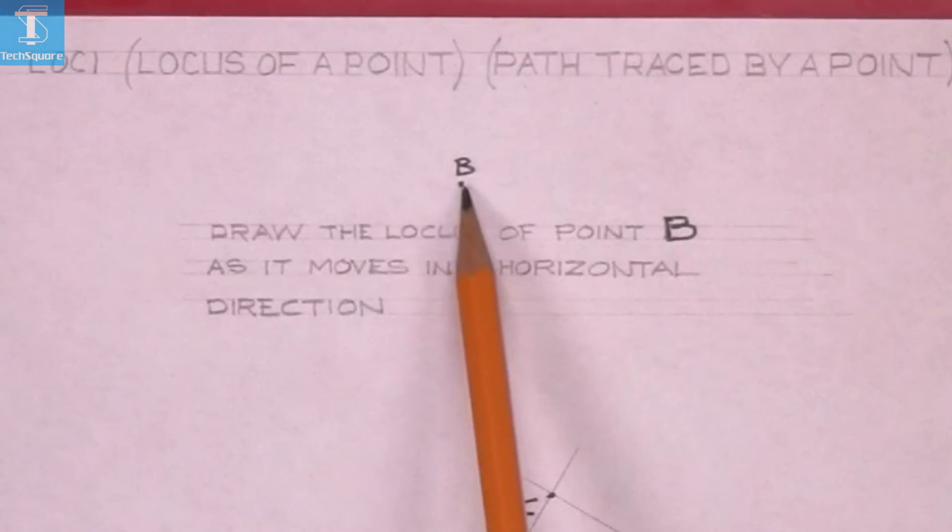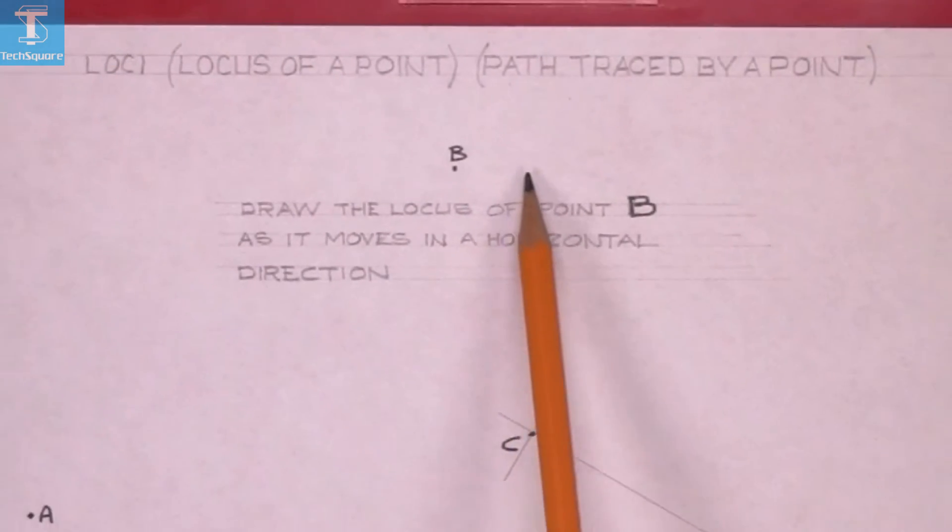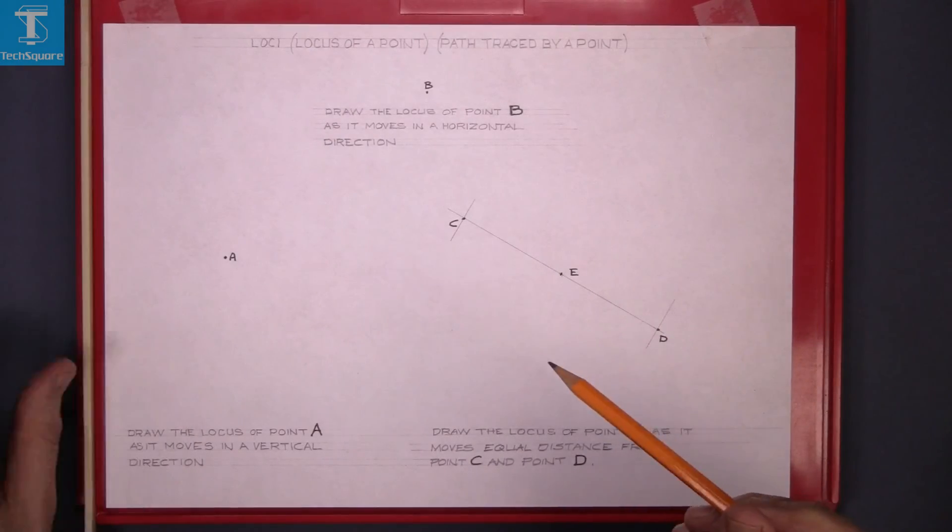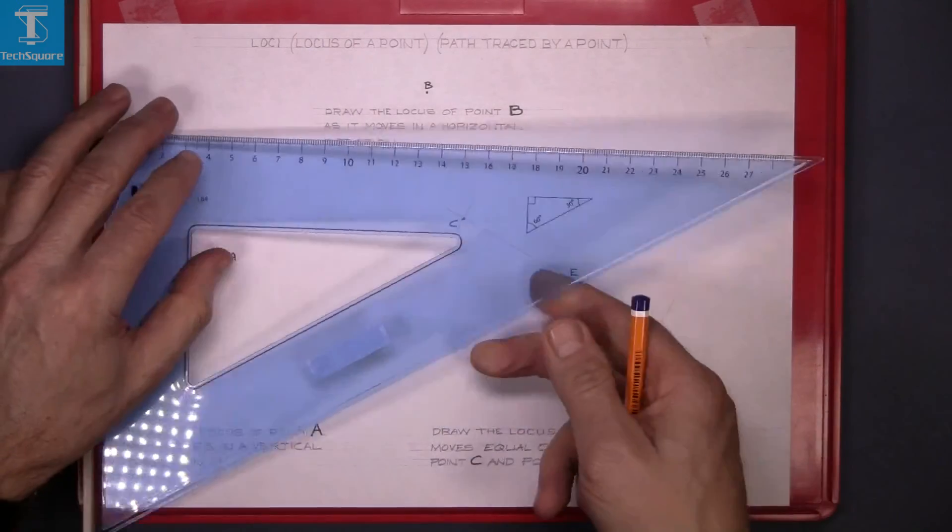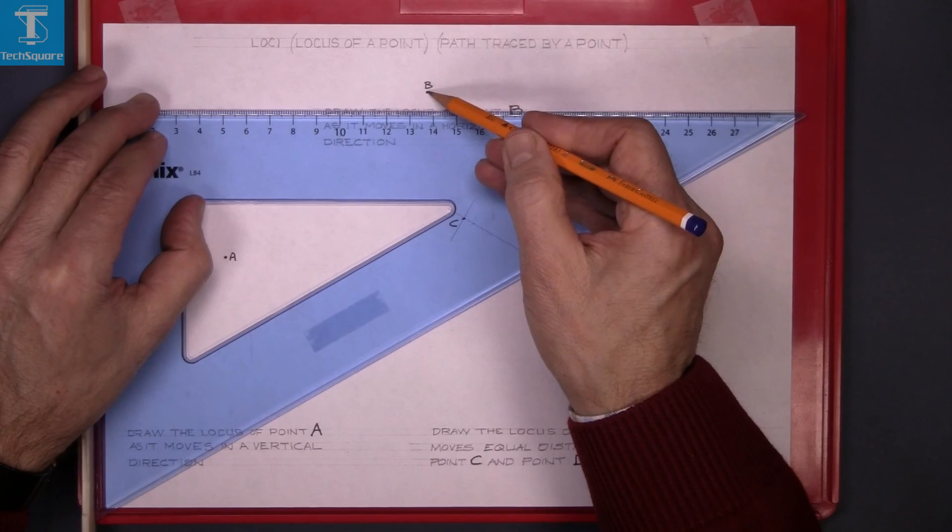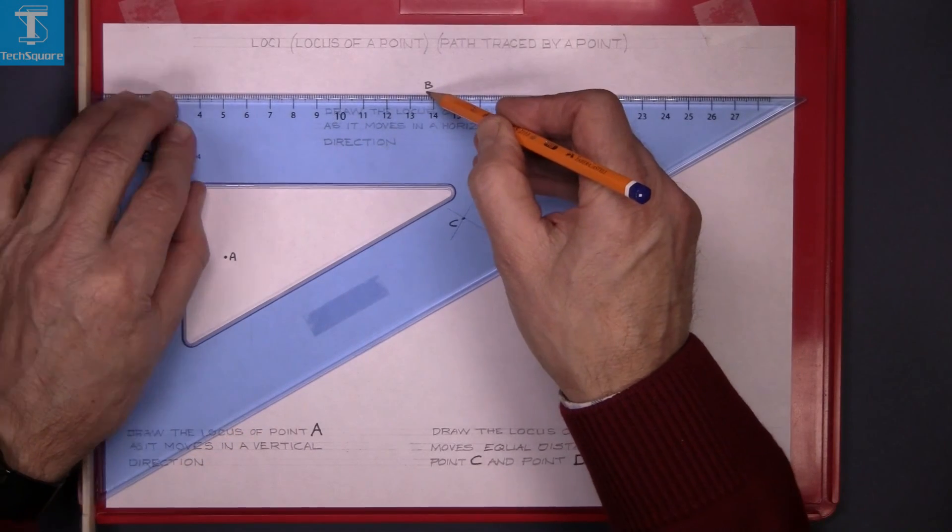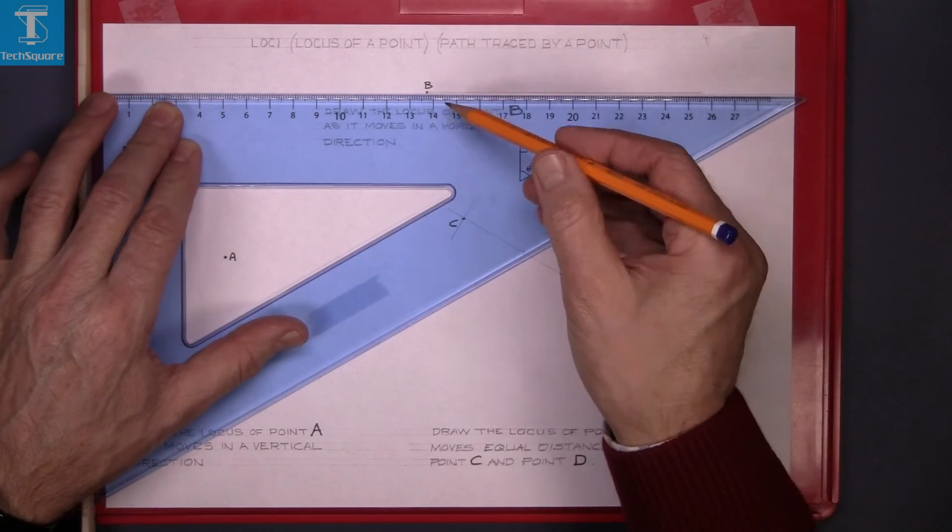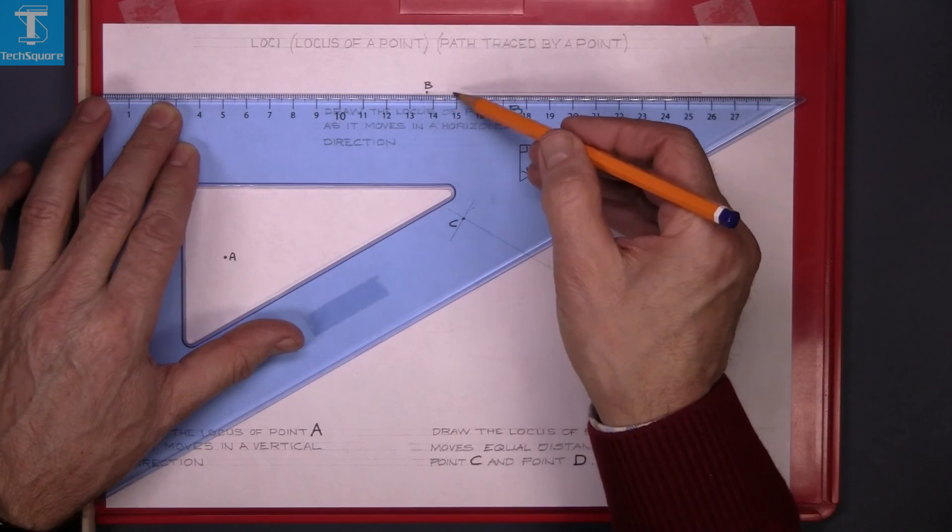So as B moves in a horizontal direction, draw the path that it would make. That has to be a horizontal line. So we'll draw a horizontal line from B. That's the path traced by point B as it moves horizontally.